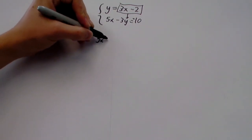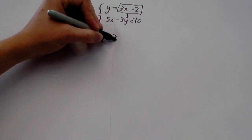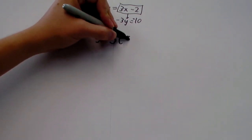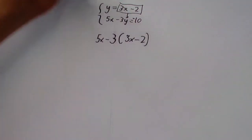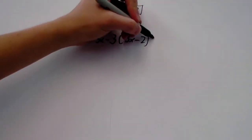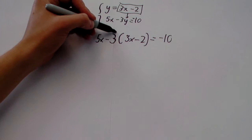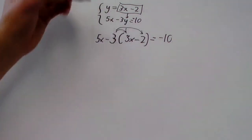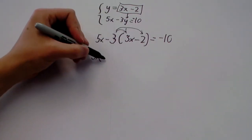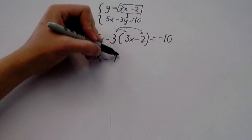This expression is equal to y, and we can just plug it in for y in this other equation, giving us 5x minus 3 times 3x minus 2 equals negative 10. And then we can distribute this 3,